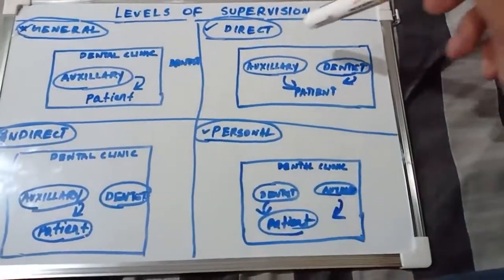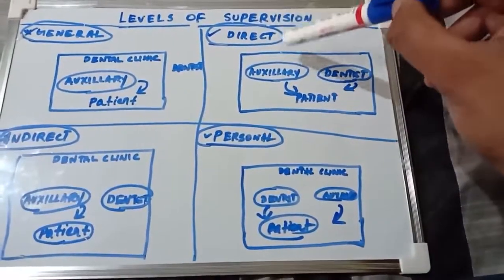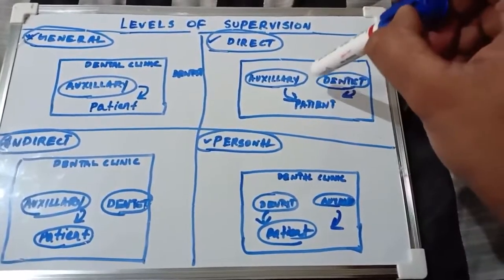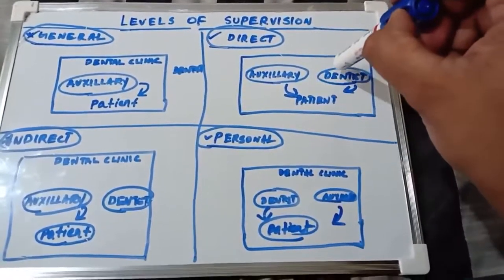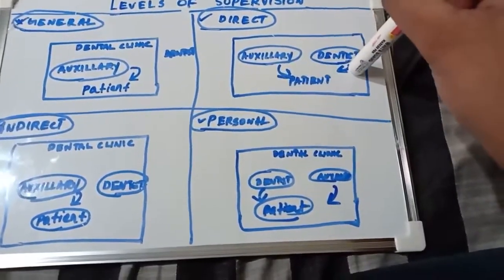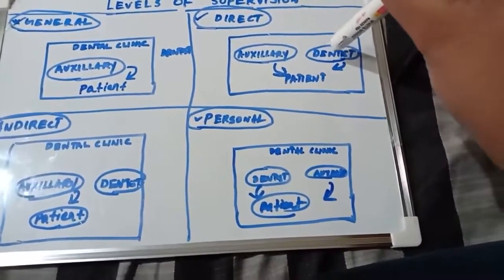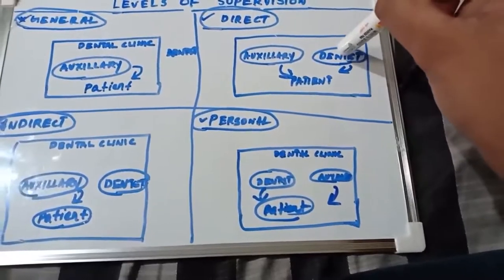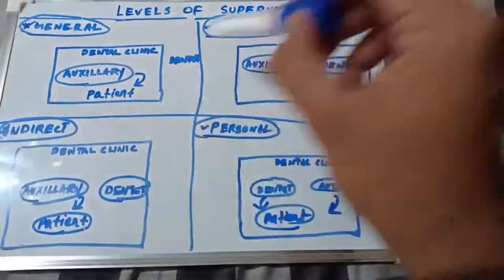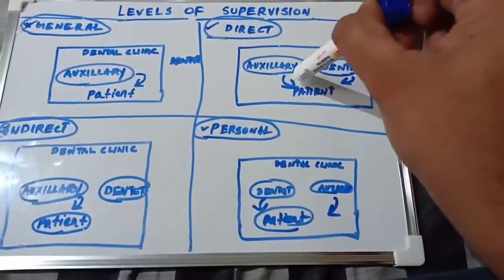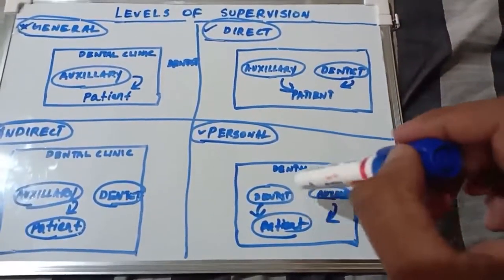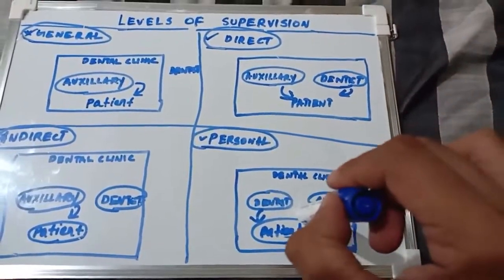In direct supervision, the auxiliary is working on the patient while the dentist is simultaneously giving attention to the same patient. The auxiliary's work is supervised by the dentist in real time. The dentist is directly monitoring each procedure — this is direct supervision, not indirect supervision.